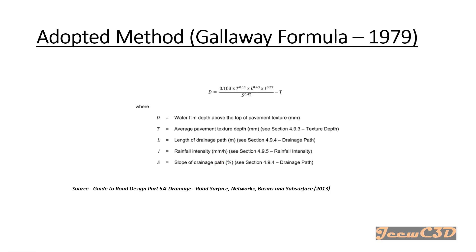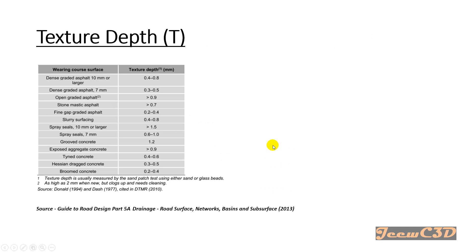In the case of Civil 3D, it will automatically calculate the water film depth. The texture will be calculated from a table in the Australia and New Zealand kit, the drainage path length will be automatically calculated from Civil 3D, and the slope of the drainage path will also be calculated automatically. We have to provide the rainfall intensity manually depending on the site.